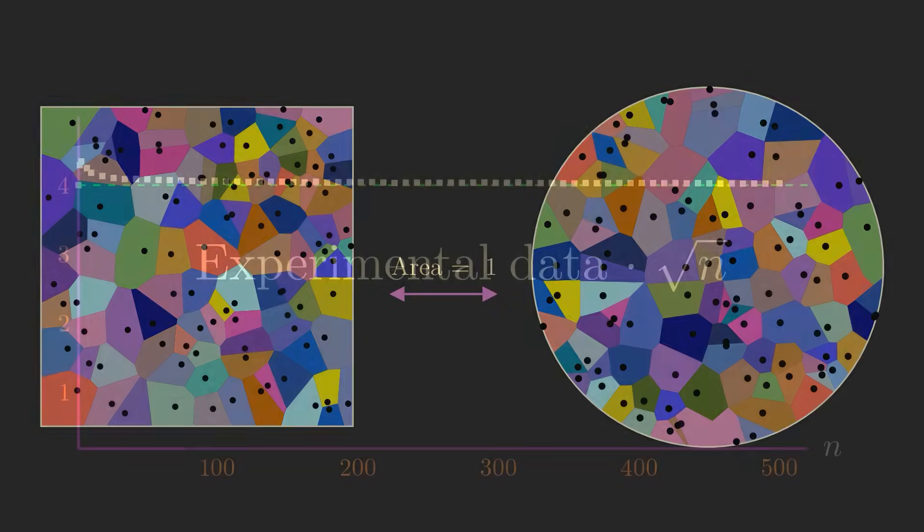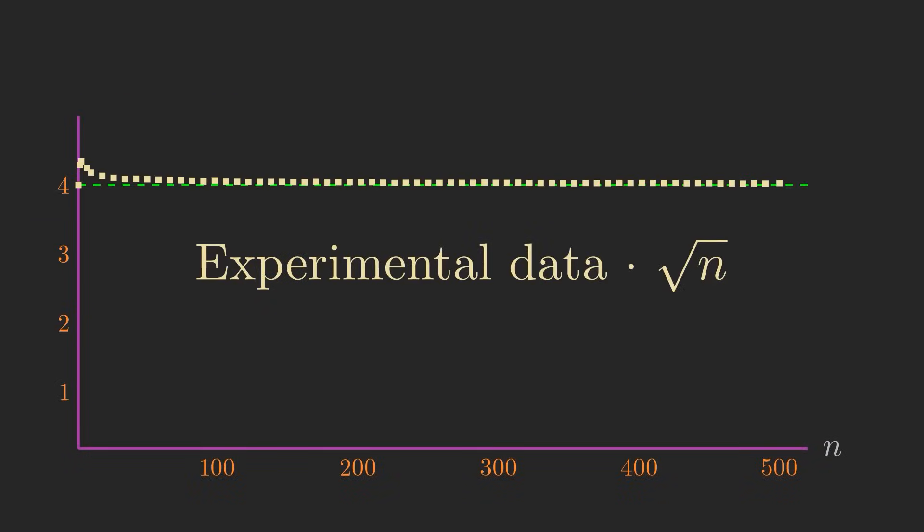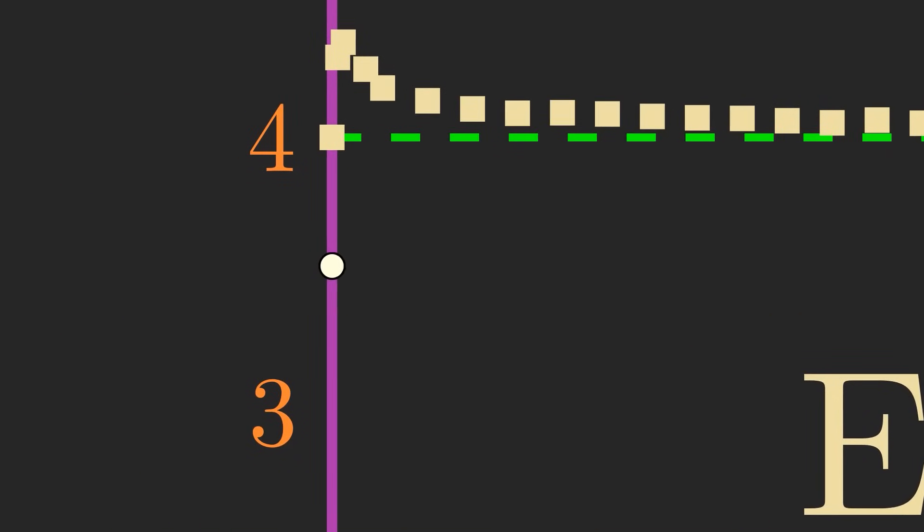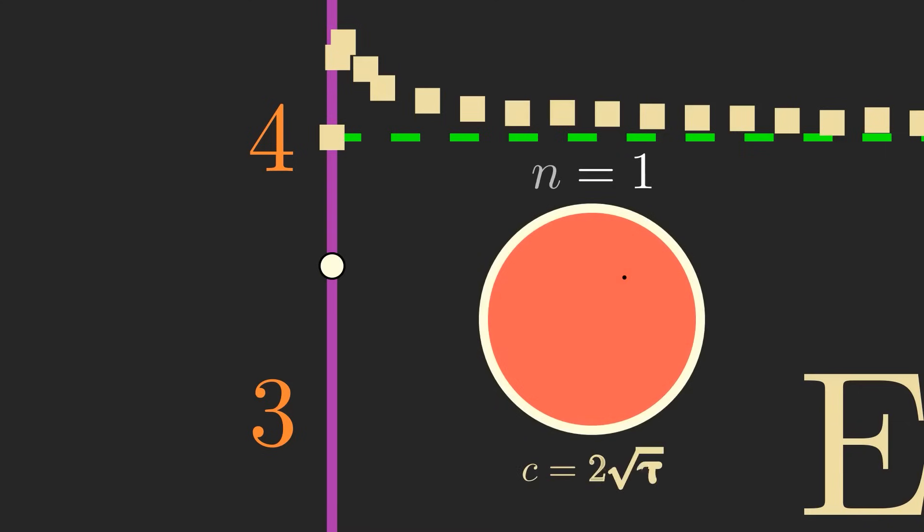Back on our plot, let's again graph the average perimeter times the square root of n for the circular boundary. For n equals 1, we just get the circumference of a circle with an area of 1, which is 2 square root of pi, or about 3.54.